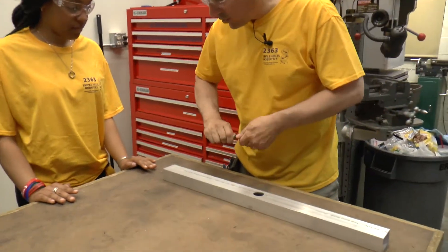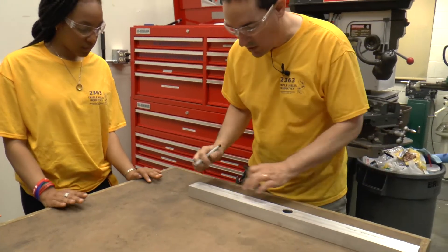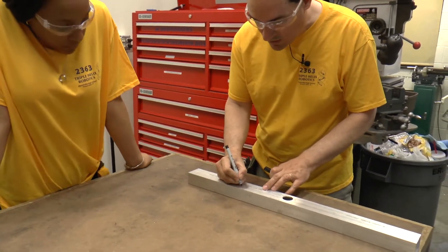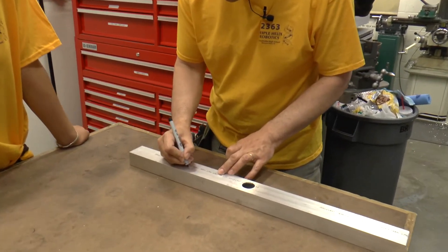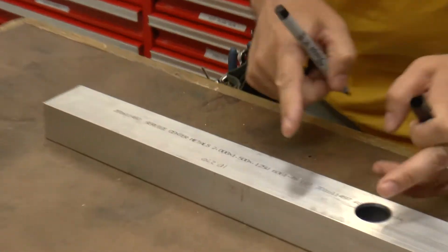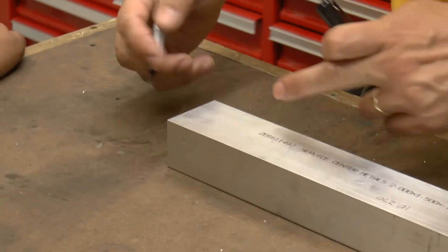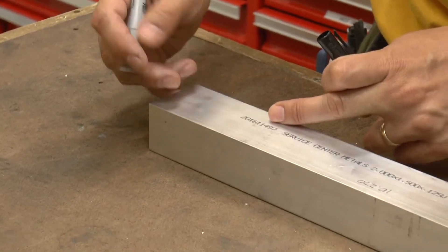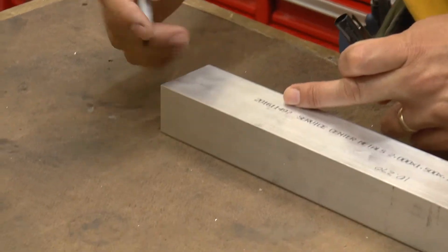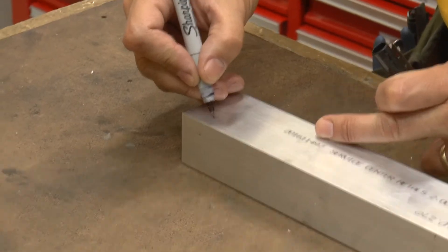We know that the holes that we want to put in here are going to be 10.270 from the center to here and then in this direction we're going to put it right in the middle which is going to be if this is two inches tall it's going to be one inch down. So I'm going to write down 1.000.